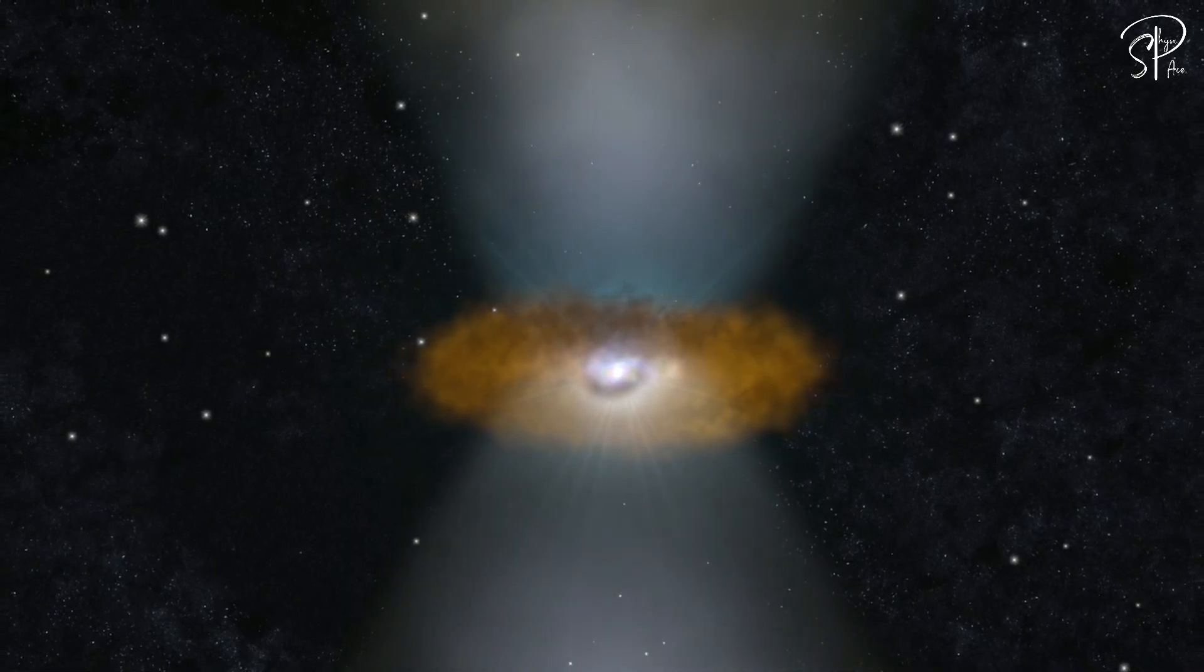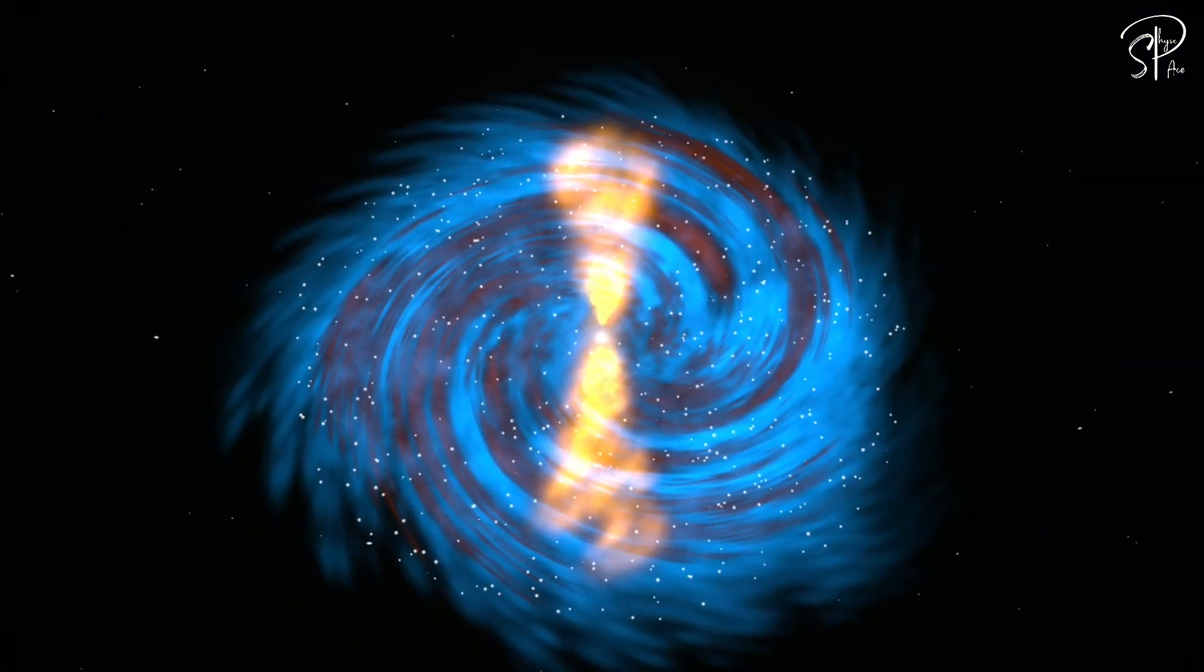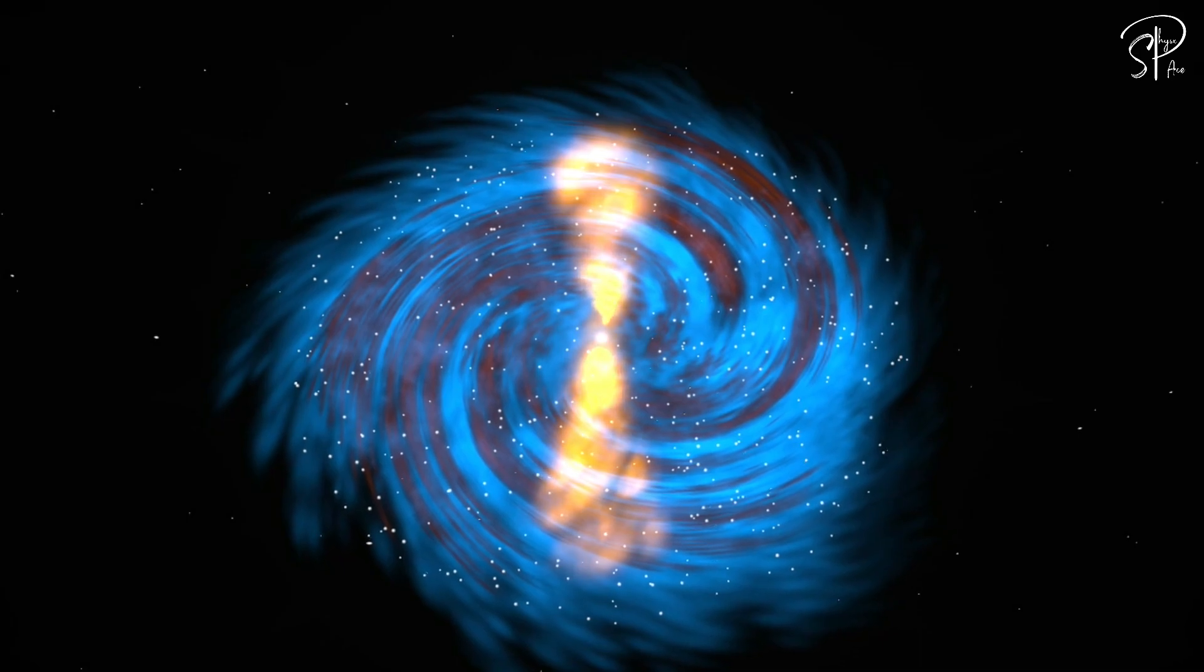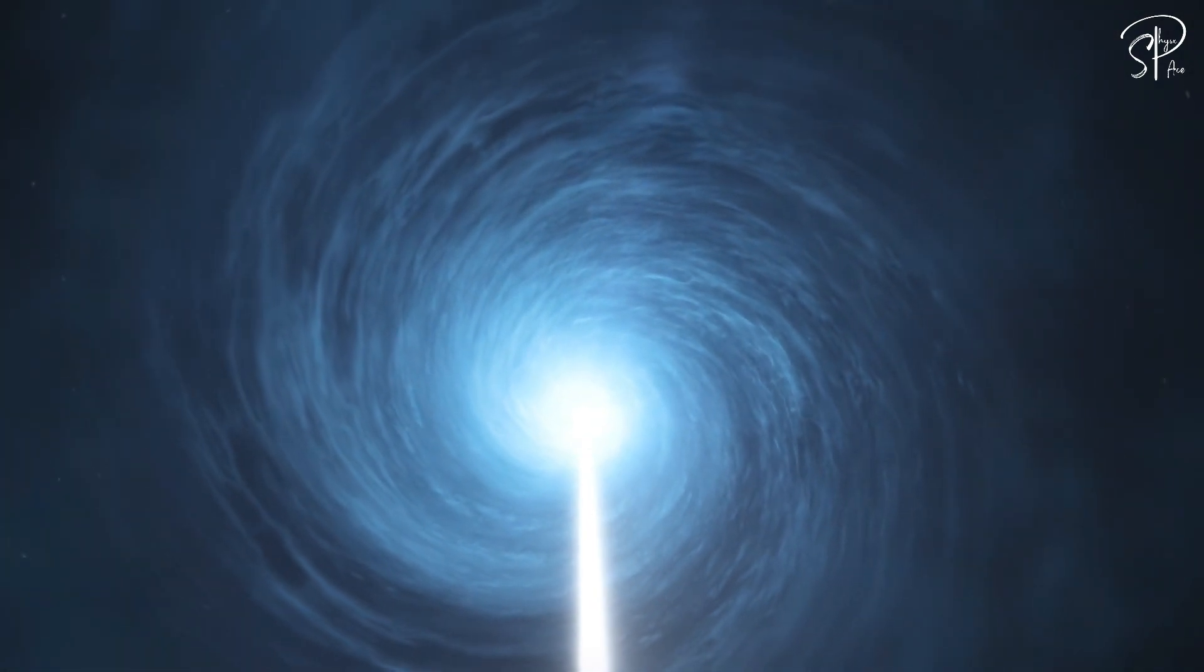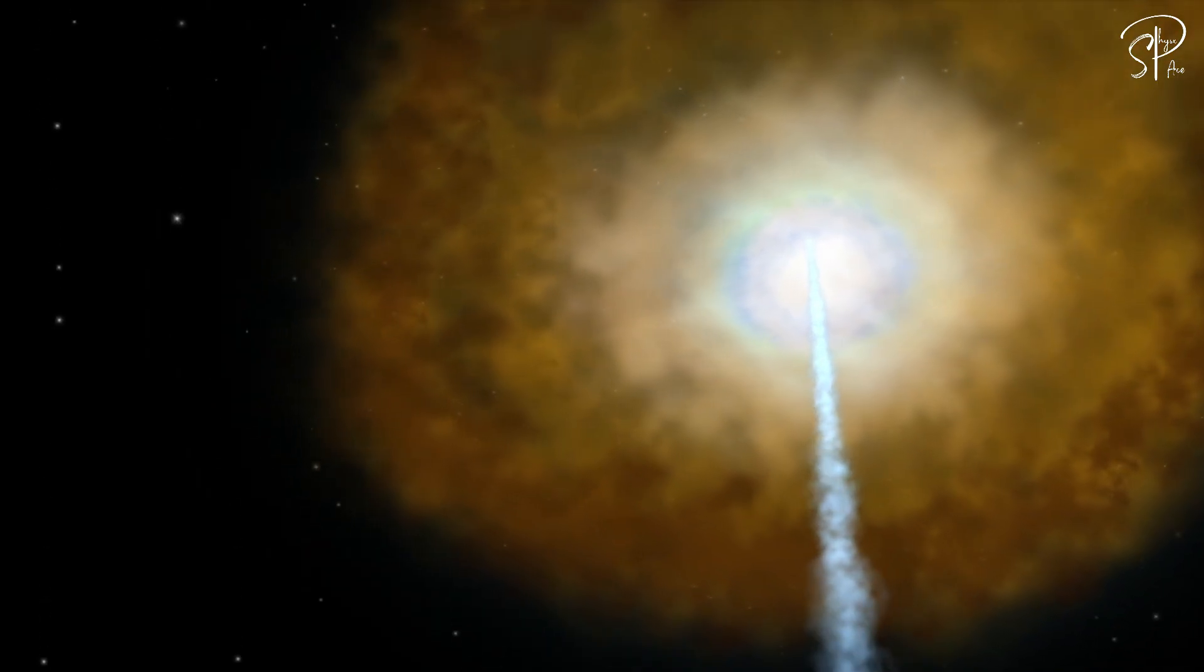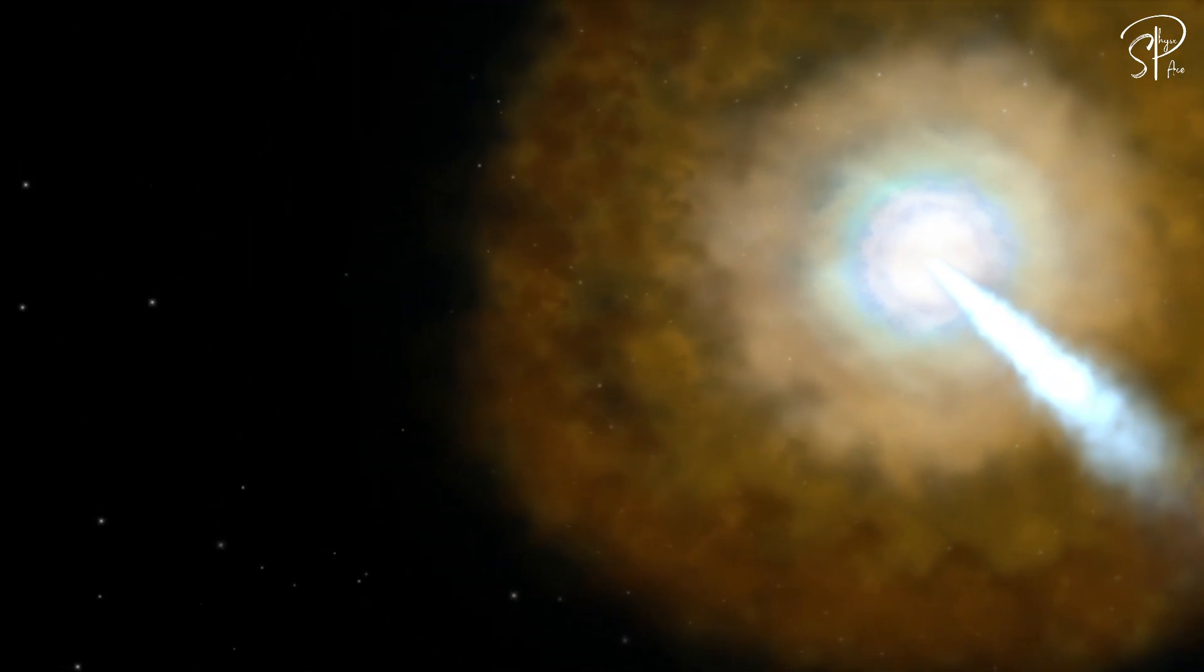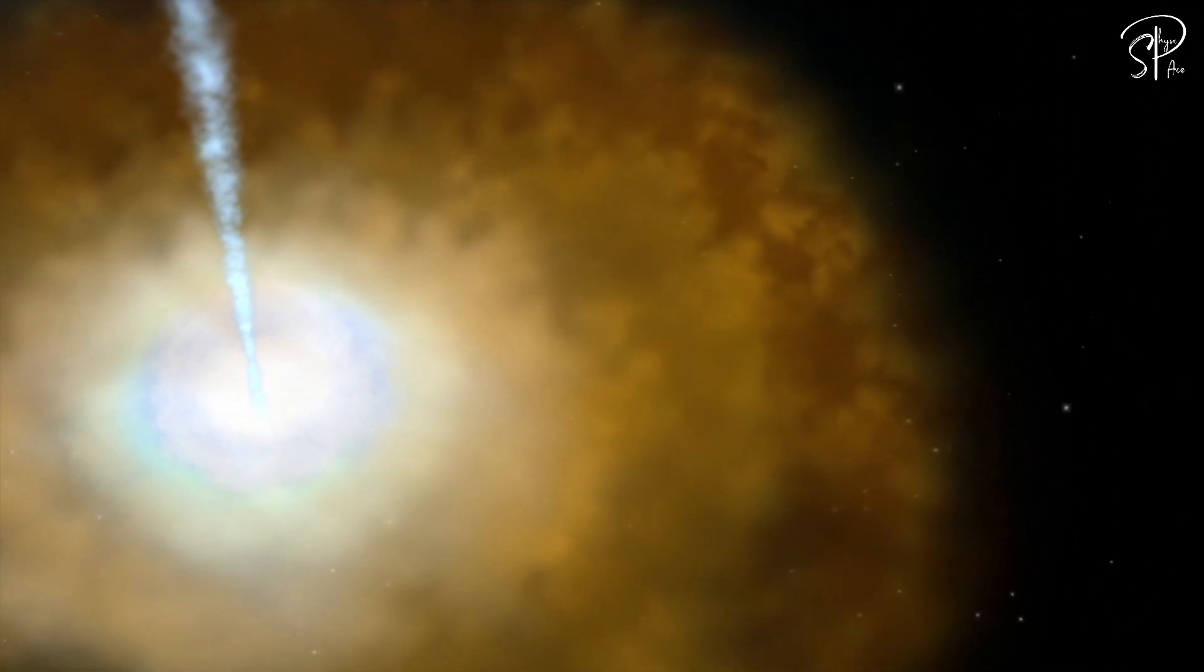When the twin jets fire vertically in the plane of the sky, visible from our vantage point on Earth, they are designated as radio galaxies. If the jets exhibit a slight inclination towards us, they are identified as quasars. However, when the jets align perfectly with our line of sight pointing directly toward Earth, they bear the classification of blazars.